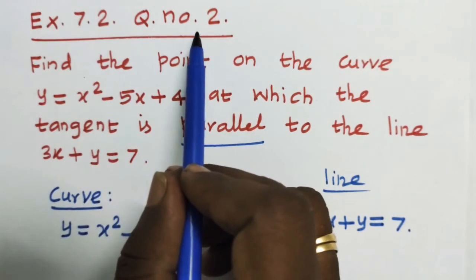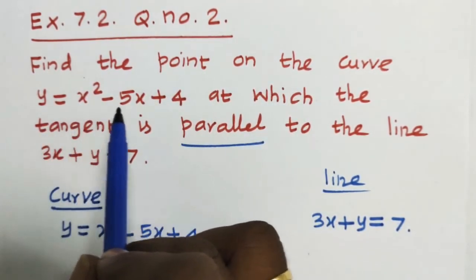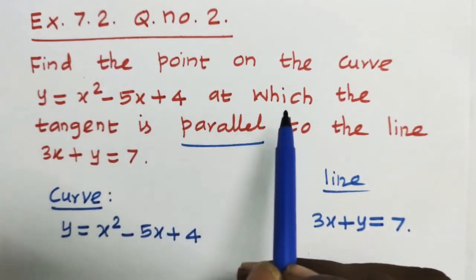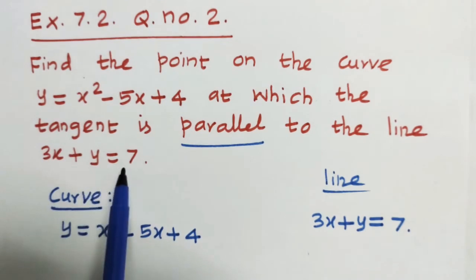Exercise 7.2, question number 2. Find the point on the curve y equals x squared minus 5x plus 4 at which the tangent is parallel to the line 3x plus y equals 7.